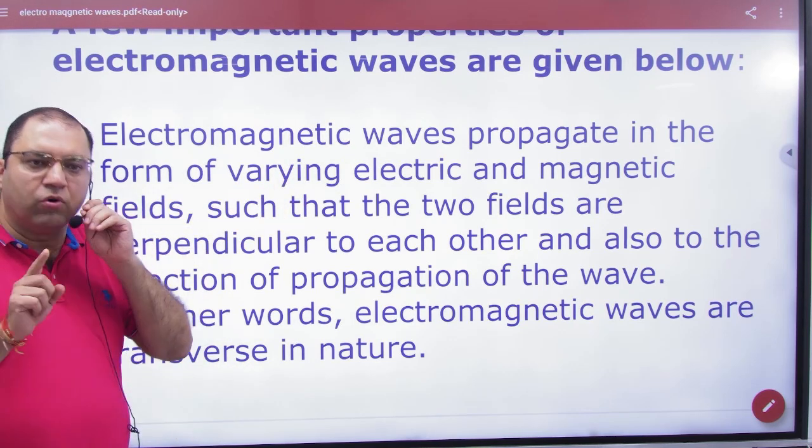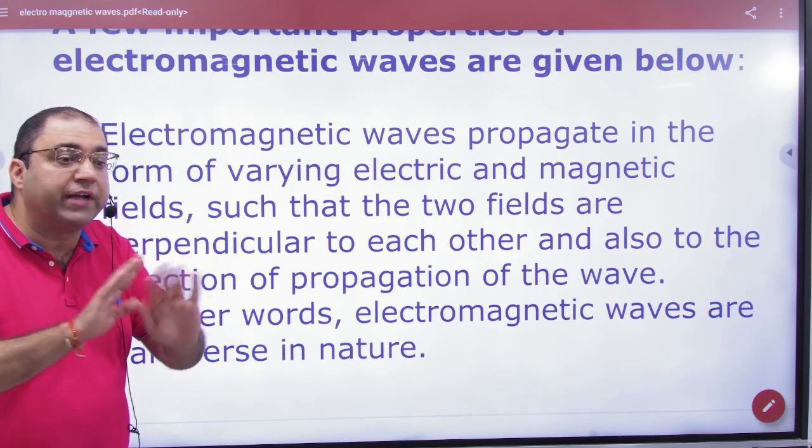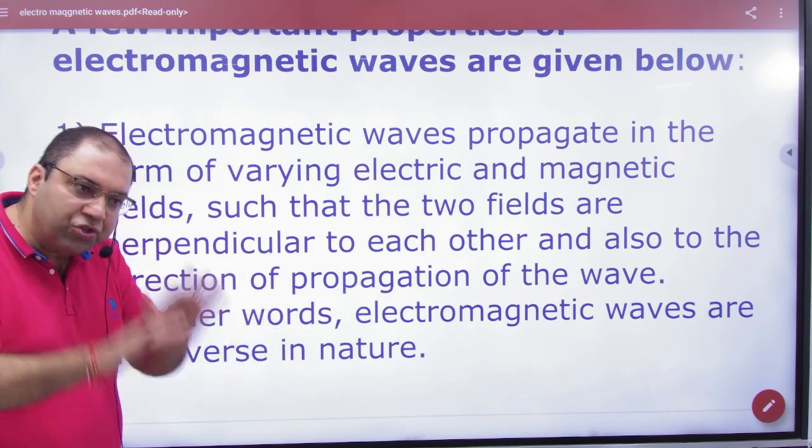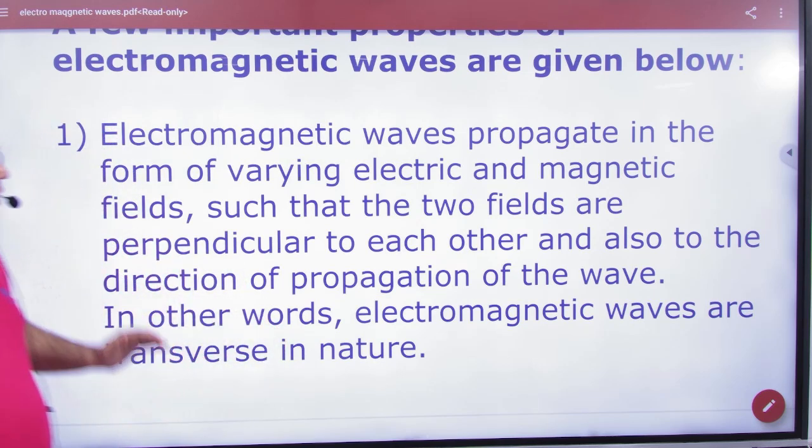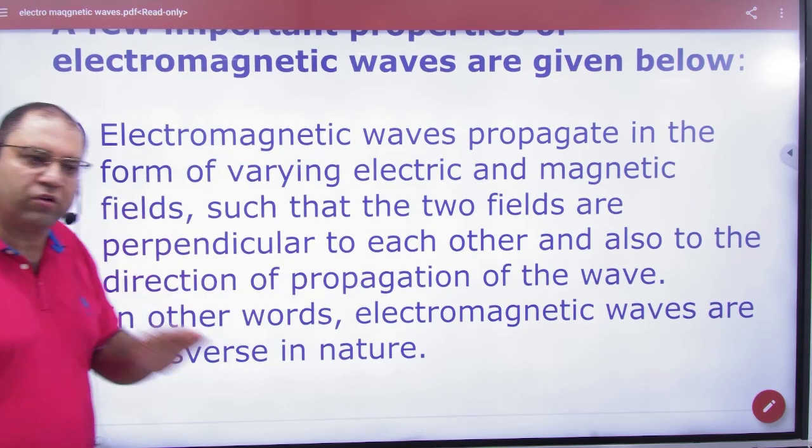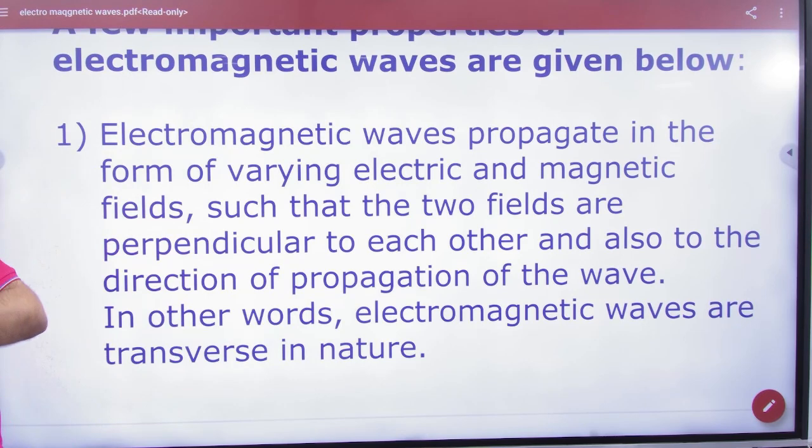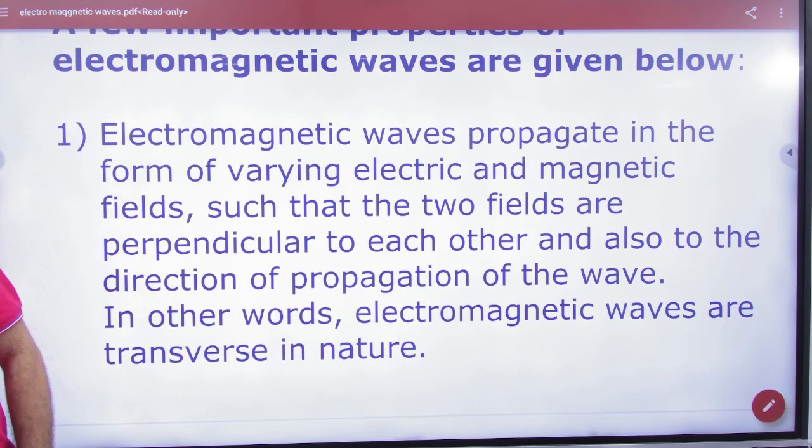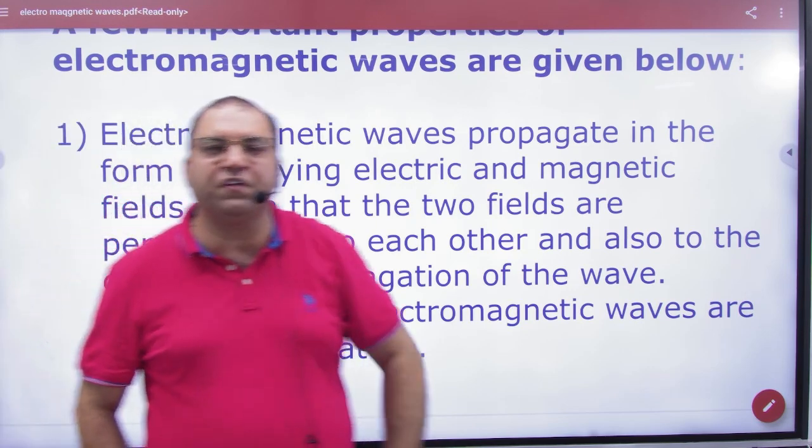Electric or magnetic fields don't need to be constant. Each time E and B should change. Varying electric and magnetic fields such that two fields are perpendicular to each other and also to the direction of propagation of the wave.